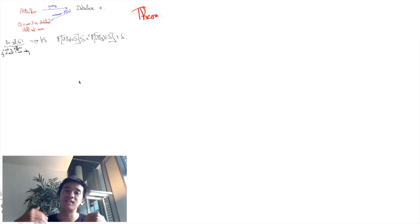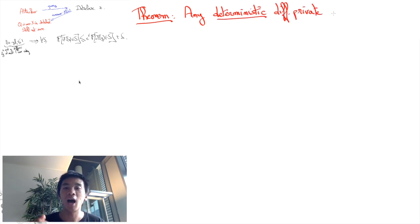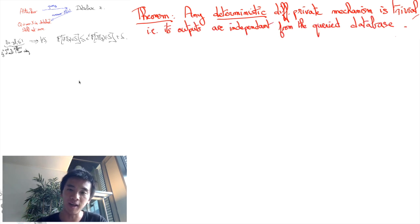And so the actual theorem is that any differentially private deterministic mechanism has to be trivial. If this is not the case, it means that for some values of X, M takes some value R, and for some other value Y,